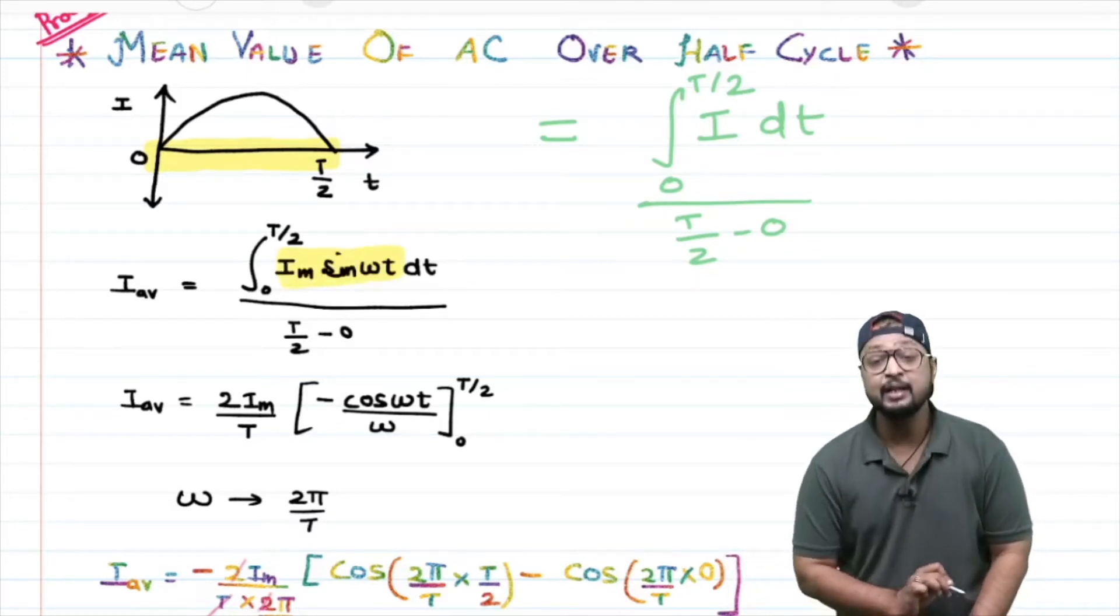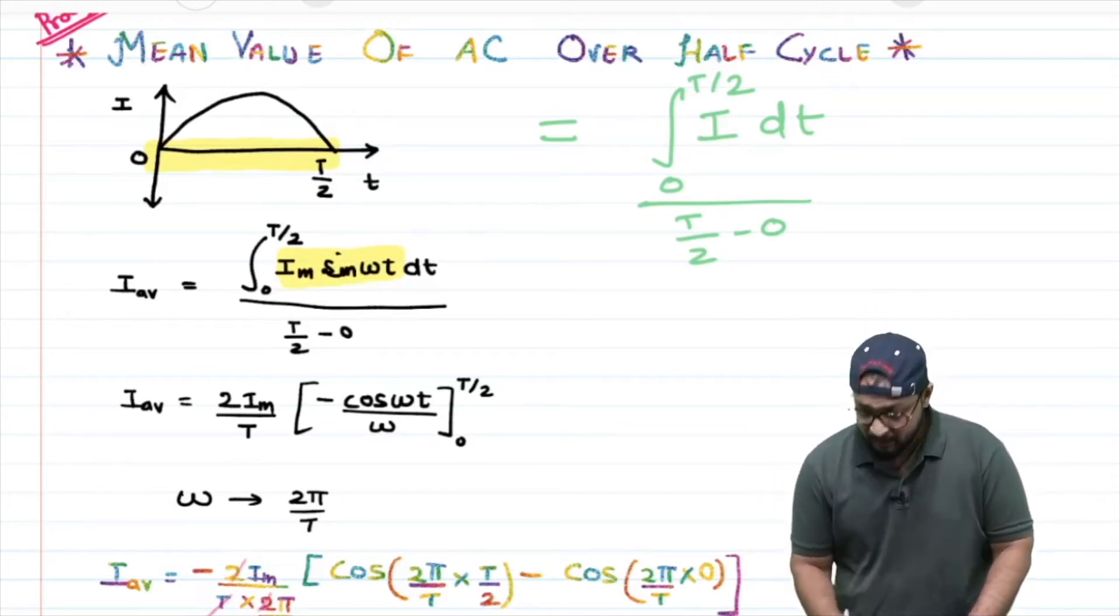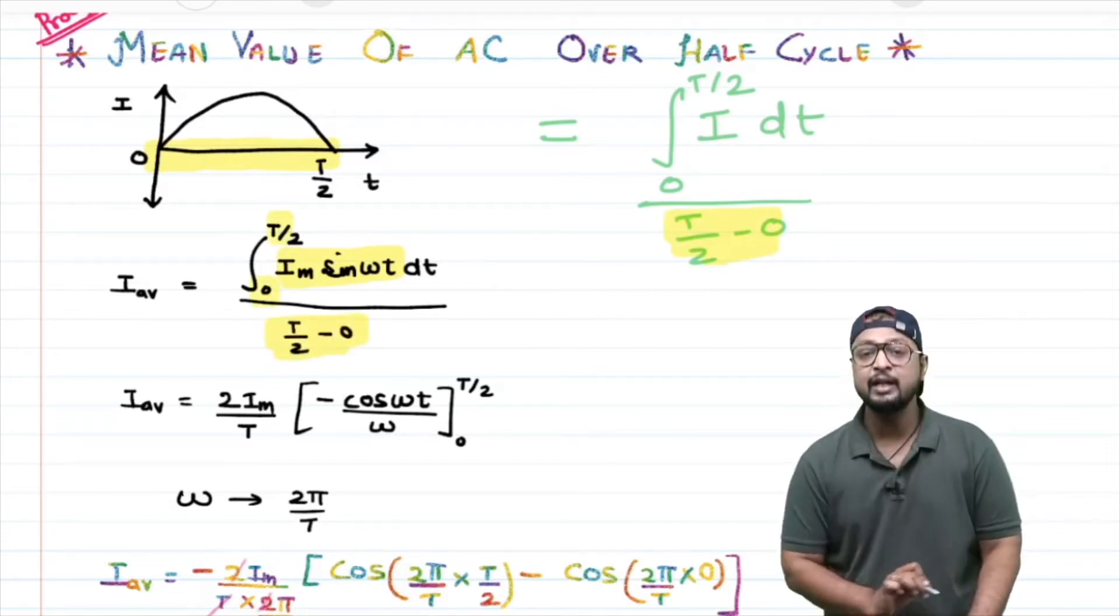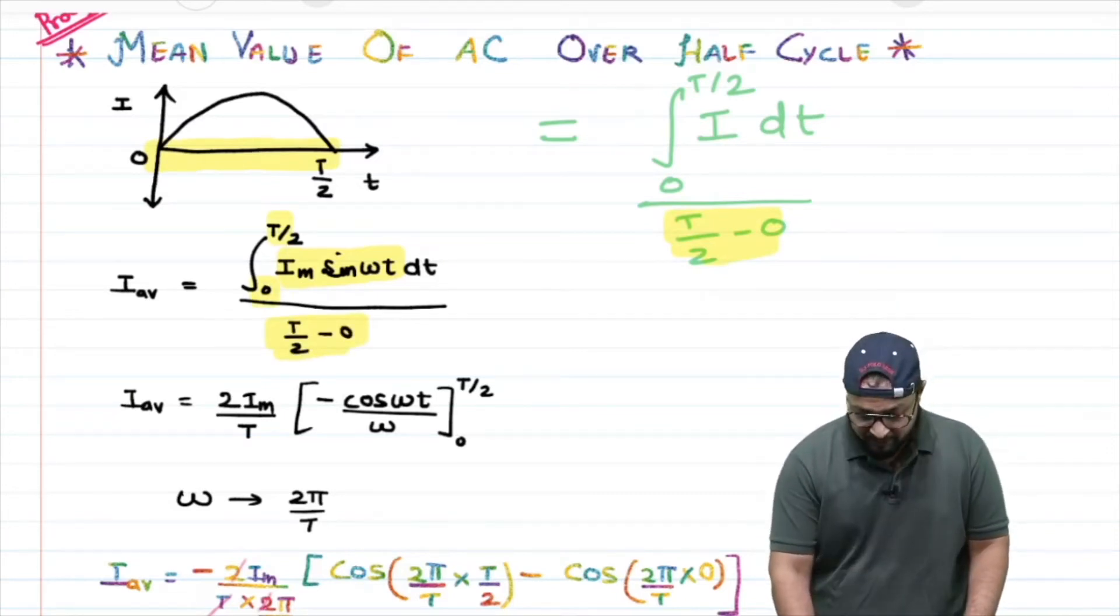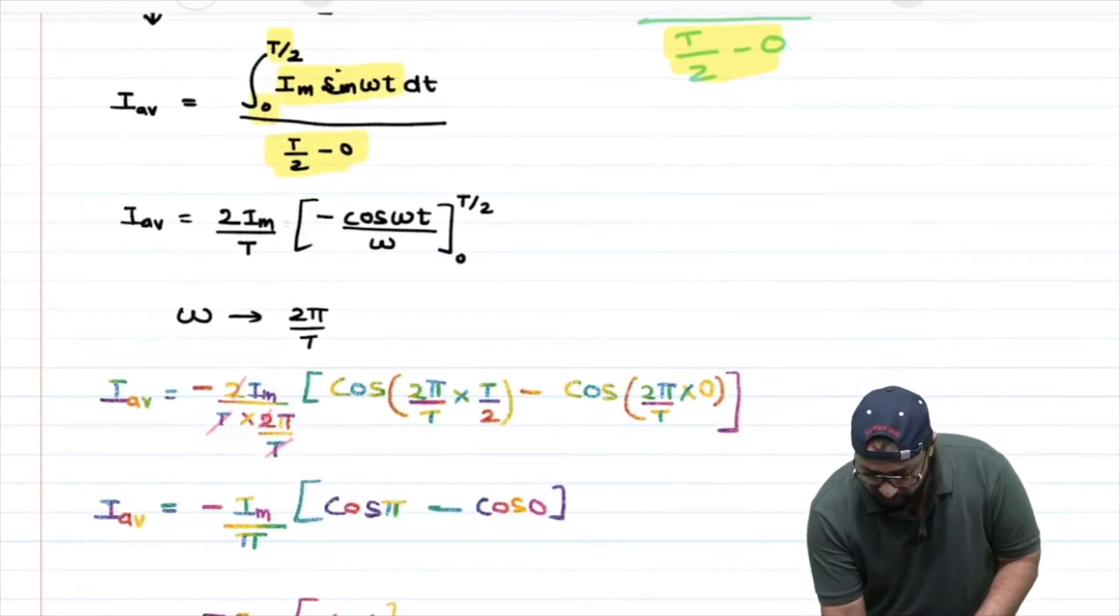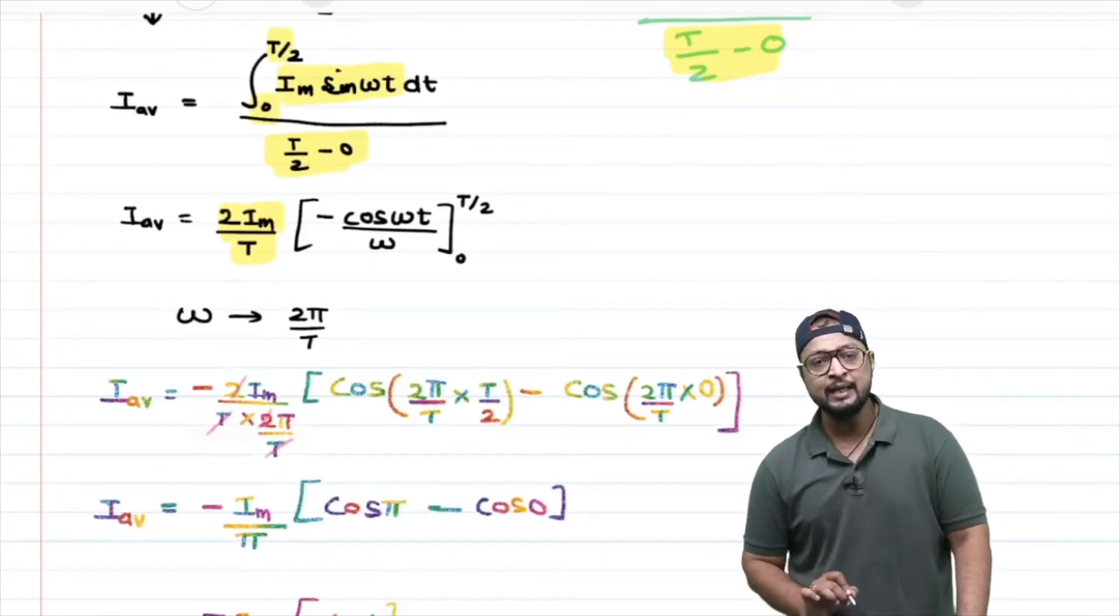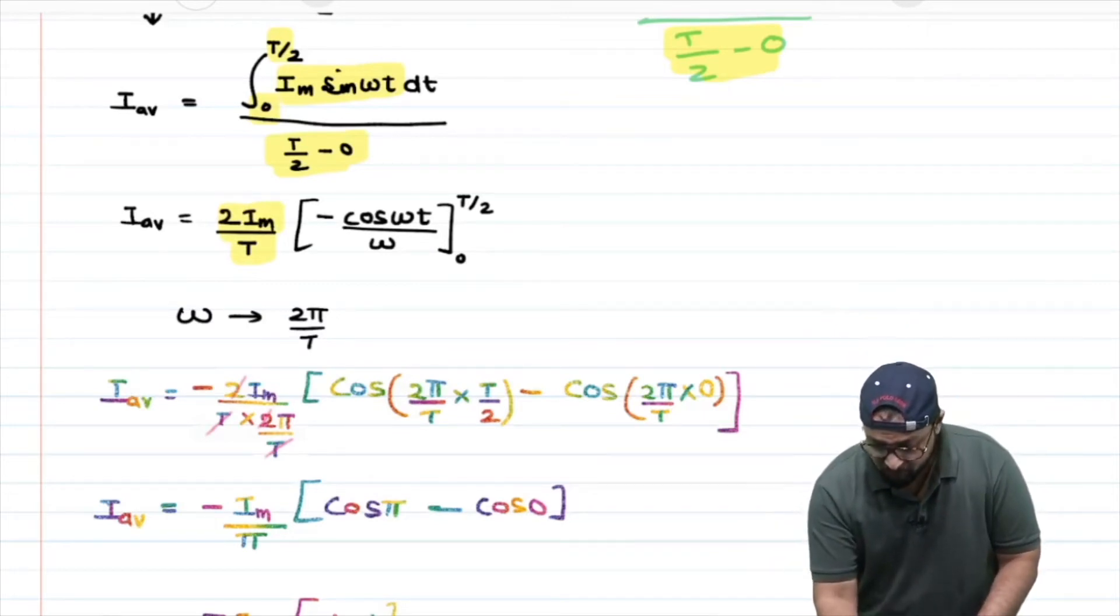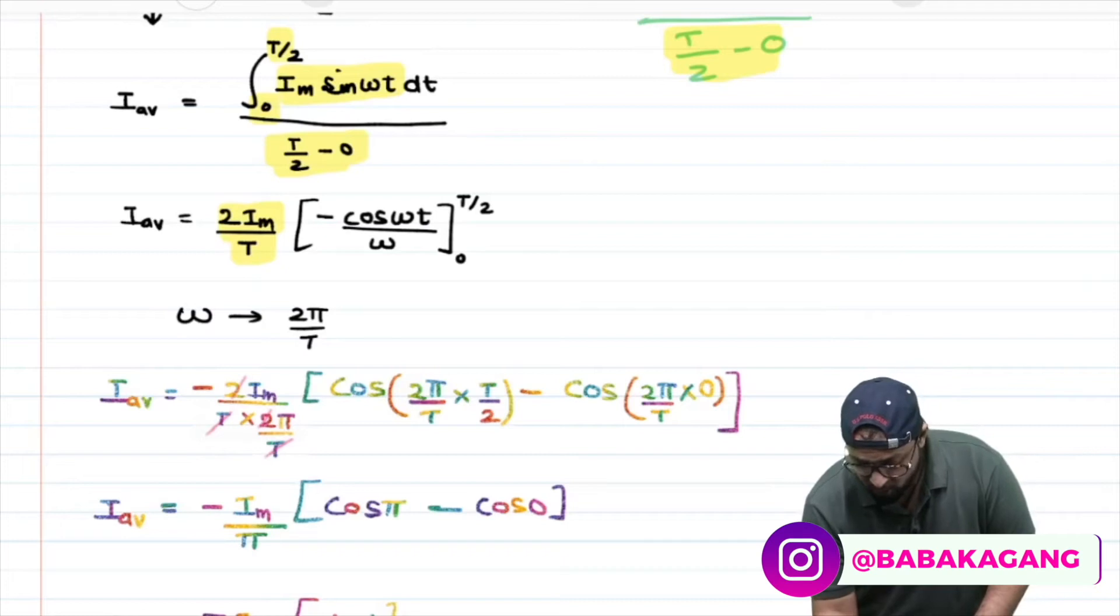I_av = (2/T) integral from 0 to T/2 of I_m sin(ωt) dt, with limits 0 to T/2. T/2 minus 0... as it comes out, 2 goes up, so 2 cancels, leaving 2I_m/T outside.